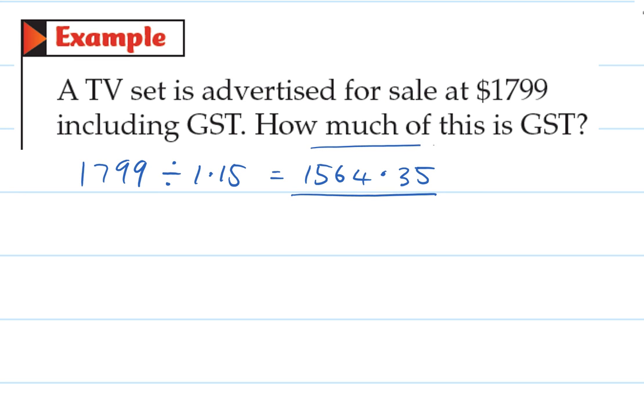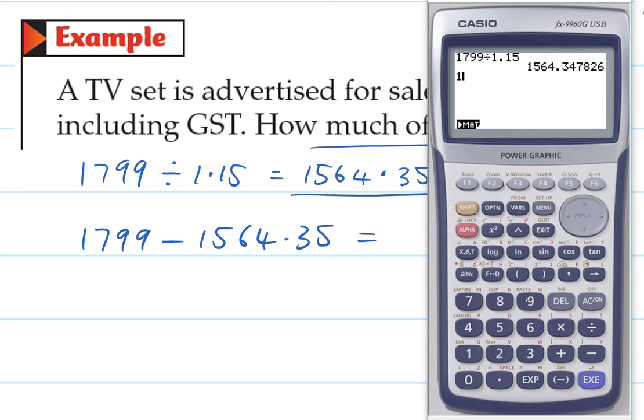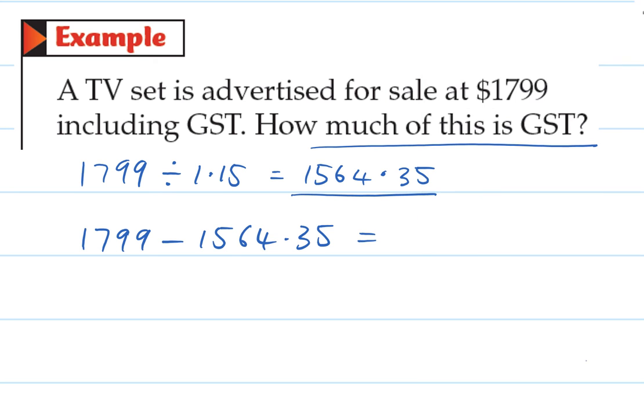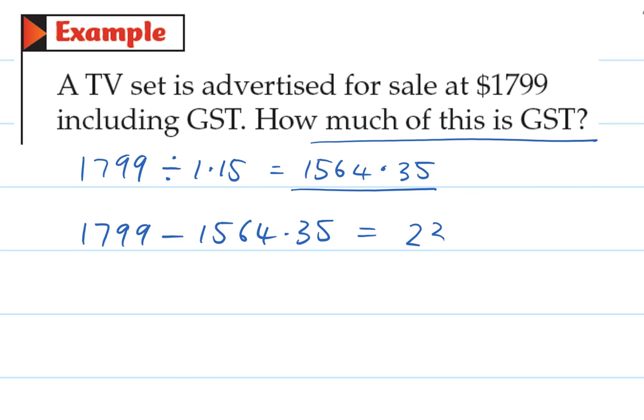But the question is asking how much of it is GST. So we still have to go 1799 minus 1564.35. So we'll go 1799 minus our answer. So that gives us $234.65. And so that's our GST component. So when you have an amount with GST in it already, you just have to be really careful.